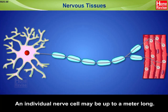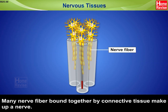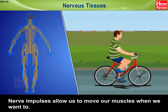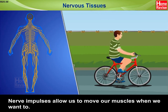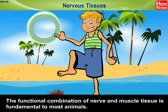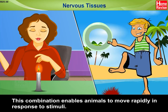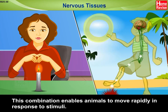An individual nerve cell may be up to a meter long. Many nerve fibers bound together by connective tissue make up a nerve. Nerve impulses allow us to move our muscles when we want to. The functional combination of nerve and muscle tissue is fundamental to most animals and enables them to move rapidly in response to stimuli.